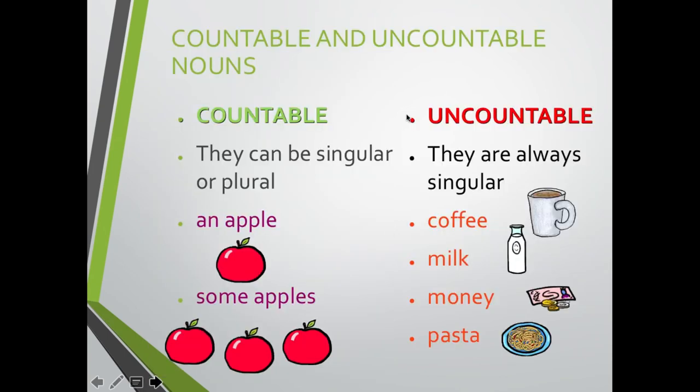Very good. Some tips. Countable and uncountable nouns. Recuerden que tenemos que diferenciar también entre los contables y los que no podemos contar. Uncountable. For countable, que es lo que hemos estado viendo hasta ahora, you can say that they can be singular or plural. ¿Cierto? Lo que podemos contar puede ser singular como por ejemplo an apple, una manzana.